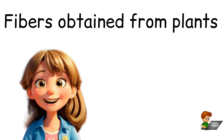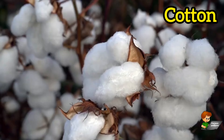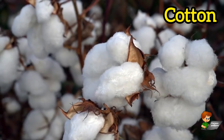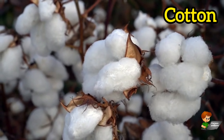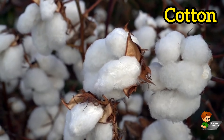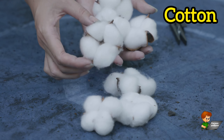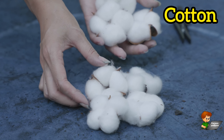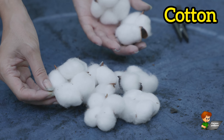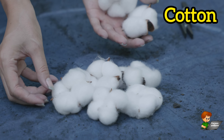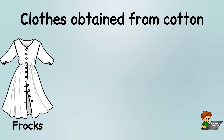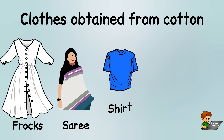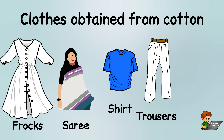Fibers obtained from plants. Cotton fiber is obtained from the cotton plant. It is used to make cotton clothes such as frocks, saree, shirt, trousers and skirt.